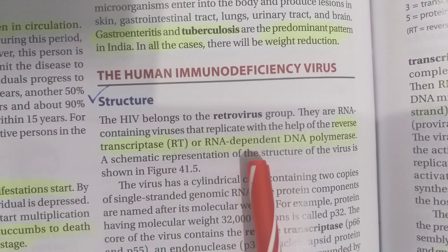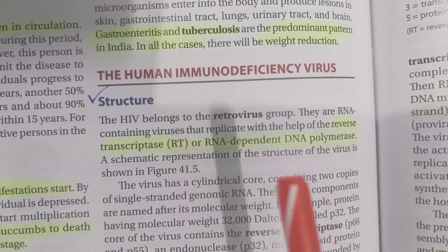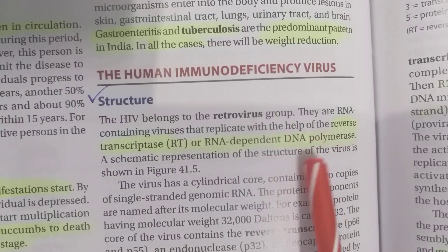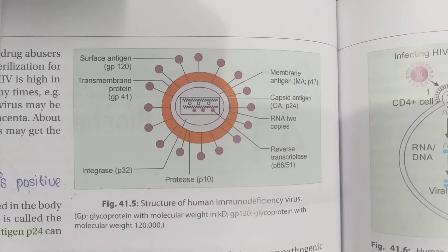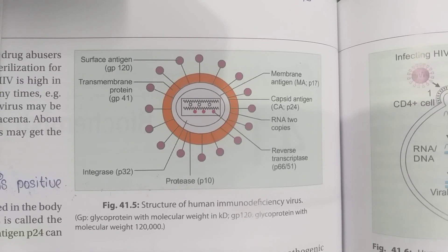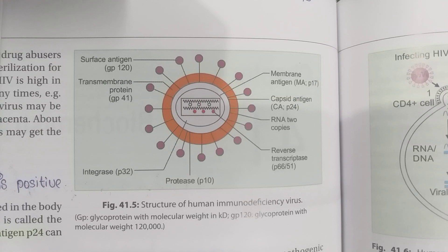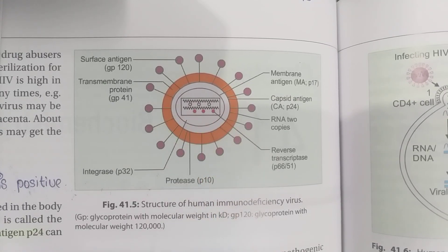Reverse transcriptase converts RNA strands to DNA strands. The HIV virus has a cylindrical core containing two copies of single-stranded genomic RNA, which you can see in the figure — it consists of two copies of single-stranded genomic RNA.